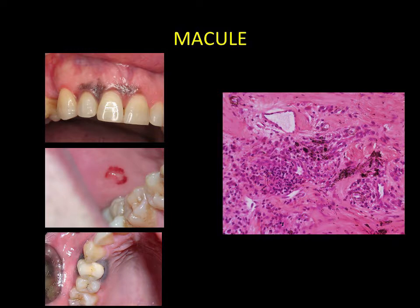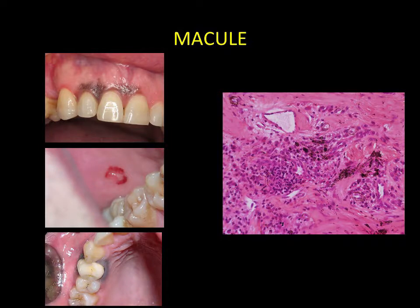Macules. These correspond to a change in the colour of the mucosa without elevation of tissue. They may be of melanic origin, as in the top photo, of hemorrhagic origin, shown on the cheek in the middle photo, or related to exogenous pigmentation caused by the diffusion of metals used in dental treatment, shown here around the tooth.